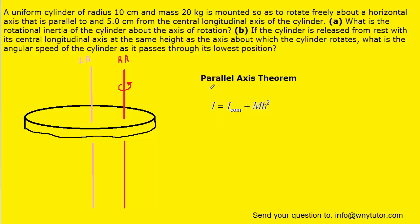And that special formula is known as the parallel axis theorem. Now when using this formula to calculate the rotational inertia of the cylinder, we're going to set it equal to the rotational inertia about the center of mass, which would be if the cylinder was actually rotating about its longitudinal axis, plus this term mh squared.